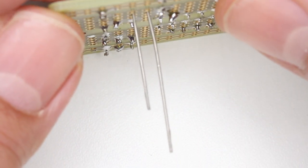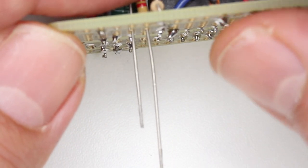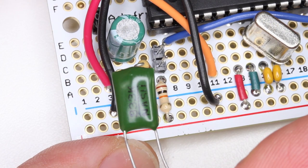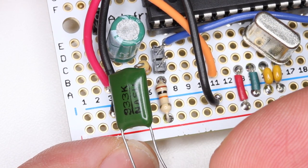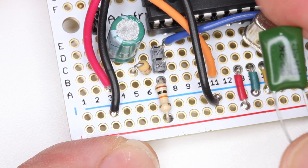Now flip the board over, solder the part, and cut the leads. Next we'll install the 33 nanofarad capacitor.